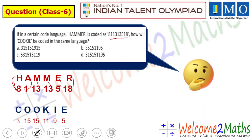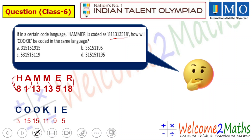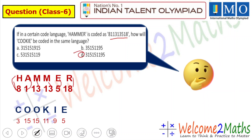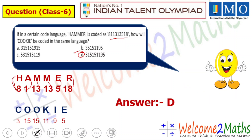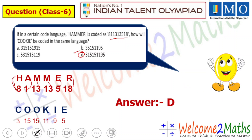We have 4 options. Which one would be the right one? Option D is 315151195. Option D is the right one.